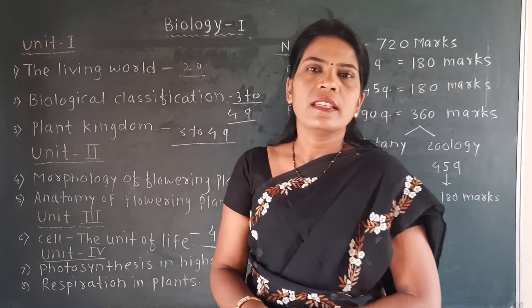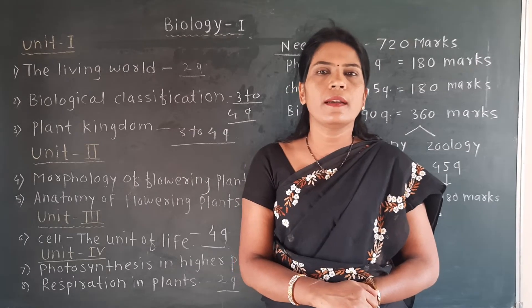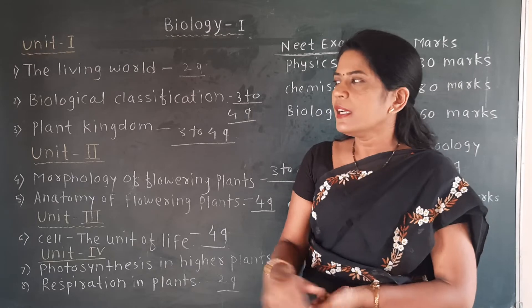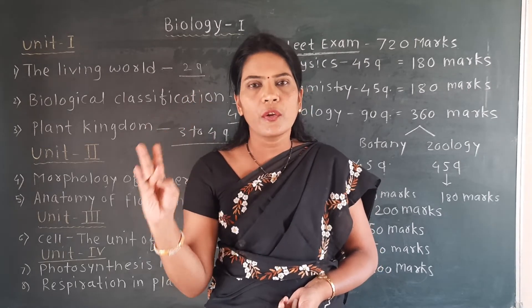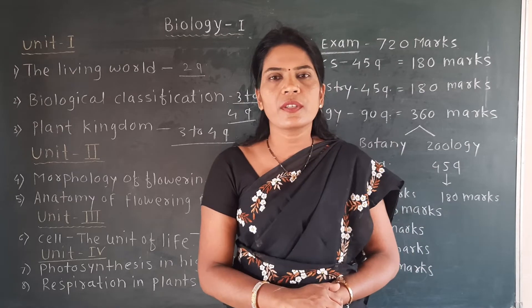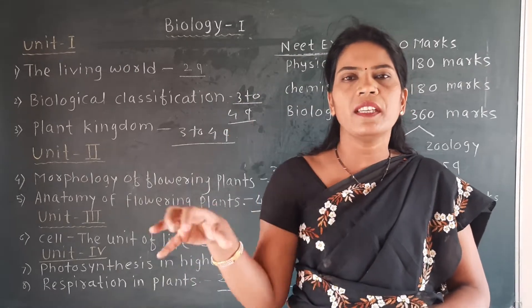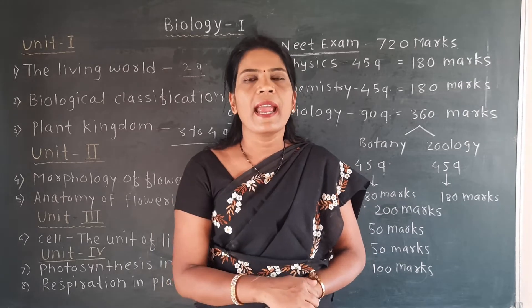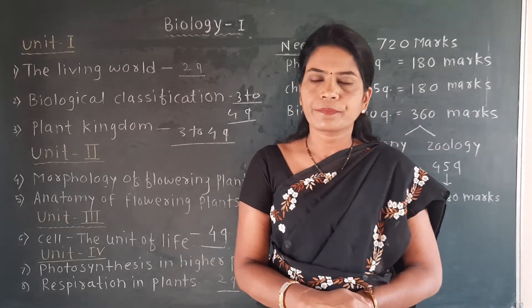The third topic is the Plant Kingdom. Out of the five kingdoms, one is the plant kingdom — multicellular, eukaryotic, fixed, autotrophic organisms. The plant kingdom is divided into five groups: Algae, Bryophyta, Pteridophyta, Gymnosperms, and Angiosperms. We will study these five groups in detail and discuss the importance of each — Algae, Bryophyta, Pteridophyta, Gymnosperms, and Angiosperms — to human beings and the environment. This topic also carries about 3 to 4 questions in the NEET exam.